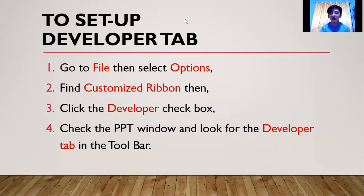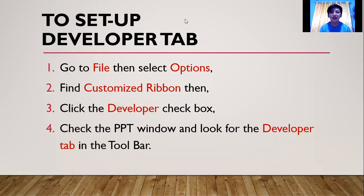To summarize: go to File then select Options; find Customize Ribbon; click the Developer checkbox; then check the PowerPoint window and look for the Developer tab in the toolbar. Enjoy and have a self-study on how to use the developer tab with VBA. Next time, I will teach you how to make an ISIM in application — applying everything in animation, action, and Visual Basic Application, including simple coding. Thank you so much for watching. This is your teacher, Teacher Daryl Del Mundo. Bye! It's so fun to learn.